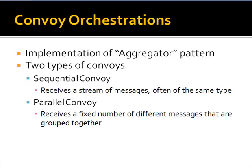Convoy orchestrations are a pattern related to BizTalk Server. If you read the Enterprise Integration Patterns book, the closest pattern described is the aggregator pattern. We have two main types: sequential convoys and parallel convoys. A sequential convoy receives a stream of messages — often the same type from the same destination, though you can build ones that receive different types. A parallel convoy groups a range of different messages together to trigger the business process. In either case, we aggregate the messages and perform some aggregation operation.